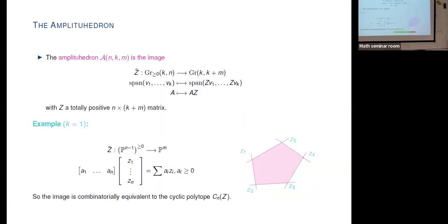So on the next slide I'll define the amplituhedron. The amplituhedron is the image of a map called the amplituhedron map. It has parameters n, k, m, and Z — a matrix. The map goes from the positive Grassmannian Gr(k,n) to a smaller Grassmannian Gr(k, k+m), where k+m is not greater than n. The map works by taking a k-dimensional subspace from the positive Grassmannian and mapping it to Z times that subspace, giving a k-dimensional subspace in R^(k+m). The matrix Z is required to be totally positive — all of its (k+m)-by-(k+m) minors must be positive.